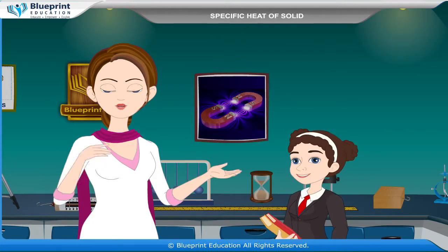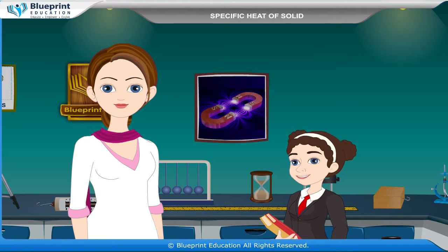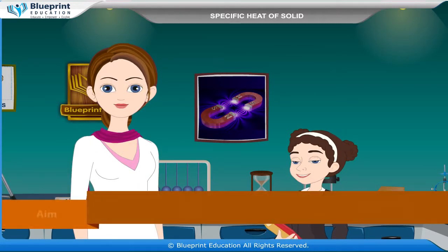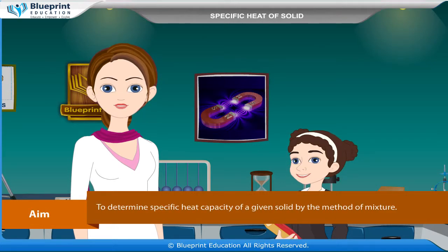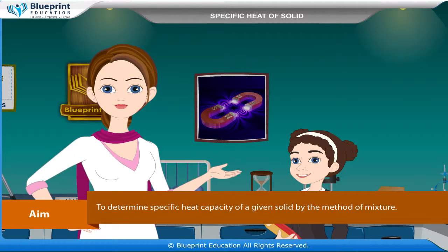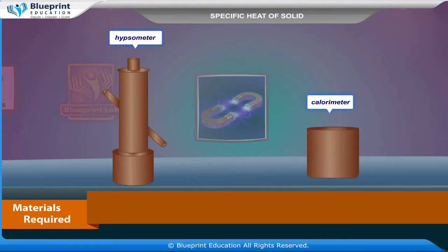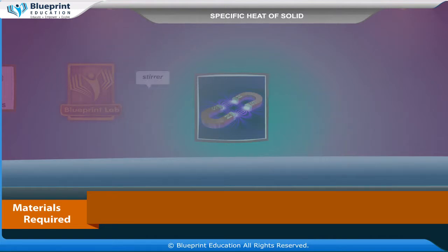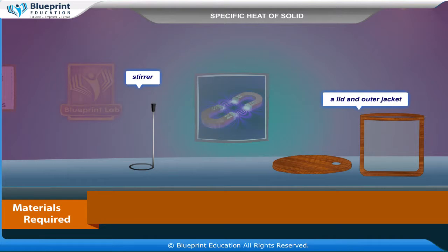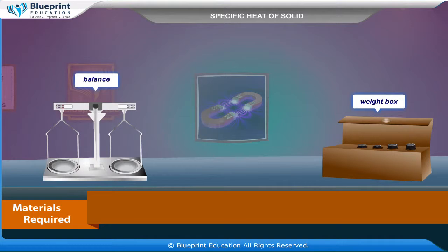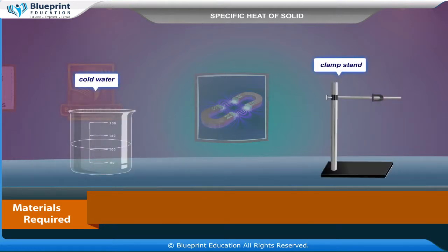Our aim is to determine specific heat capacity of a given solid by the method of mixture. Materials required: a hypsometer, calorimeter, stirrer, a lid, an outer jacket, two half-degree thermometers, given solid in powdered form or small pieces, balance, weight box, cold water, and clamp stand.